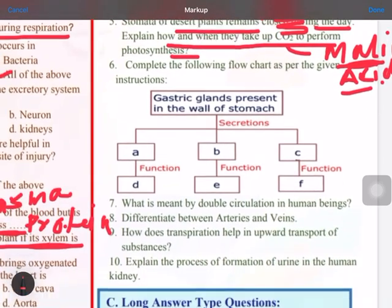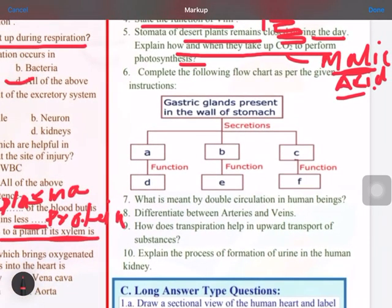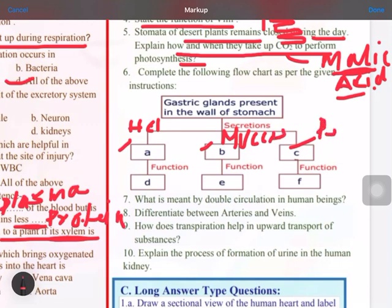Now in this flow chart, gastric glands present in the wall of stomach, what are the three things which they are releasing? You have to write first HCl, then mucus, and pepsin. So the function of HCl is there are two functions: you have to write it will kill the germs in the food which are coming through the food, and second it will make the environment acidic which will be helpful for this pepsin enzyme, or you can say it helps in the activation of pepsin enzyme.